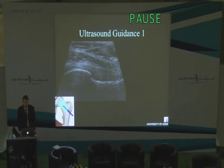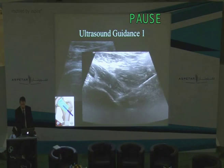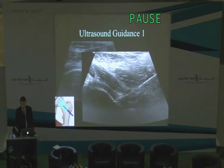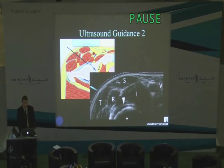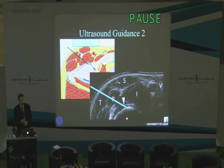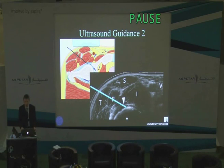Traditionally, ultrasound came along and everybody thought we'd just do it the same way - look at this longitudinal image of the femoral neck and direct the needle along that area. But in fact that's actually quite difficult - quite a long distance, you usually need a long needle, and it can be difficult to get a good position. So what we perform in Leeds now, and many other areas also do, is to go in short axis. This gives you much better visibility of the needle, usually meaning you can get away with a 5cm, 20-gauge needle into the joint itself, which is much more conspicuous on ultrasound.